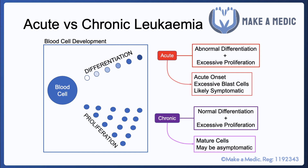With chronic leukemia on the other hand, you get mature cells in the peripheral circulation, but you get a huge number of them as well. Patients may actually be asymptomatic with chronic leukemias for quite some time. However, it can first of all undergo a blast transformation — which is essentially when chronic leukemia becomes acute — but it can also infiltrate the bone marrow and lead to consequences of bone marrow failure as well.